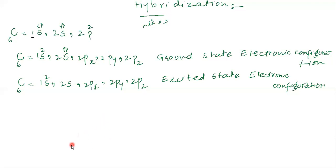If we keep one electron clockwise, the other in a different orbital will also be clockwise. If we keep one anti-clockwise, the other will also be anti-clockwise. We call this the ground-state electronic configuration.